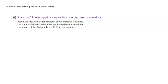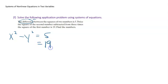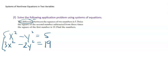Now for an application problem. 'The difference between the squares of two numbers is 5.' That gives us: x² − y² = 5. 'Twice the square of the second number, subtracted from three times the square of the first number, is 19.' That gives: 3x² − 2y² = 19. There's our system — it looks very similar to problems we've already done.